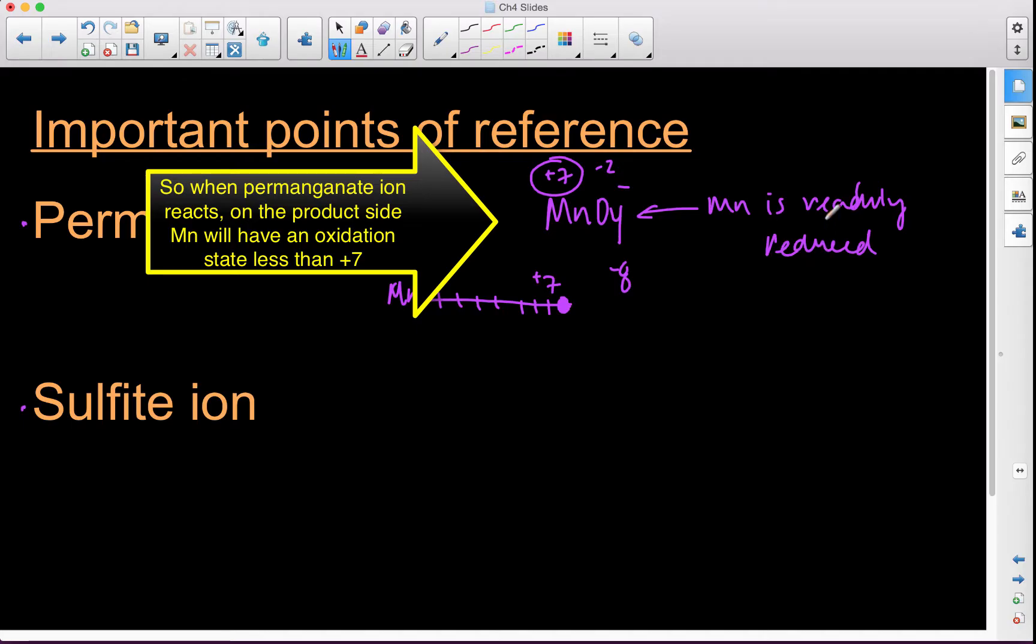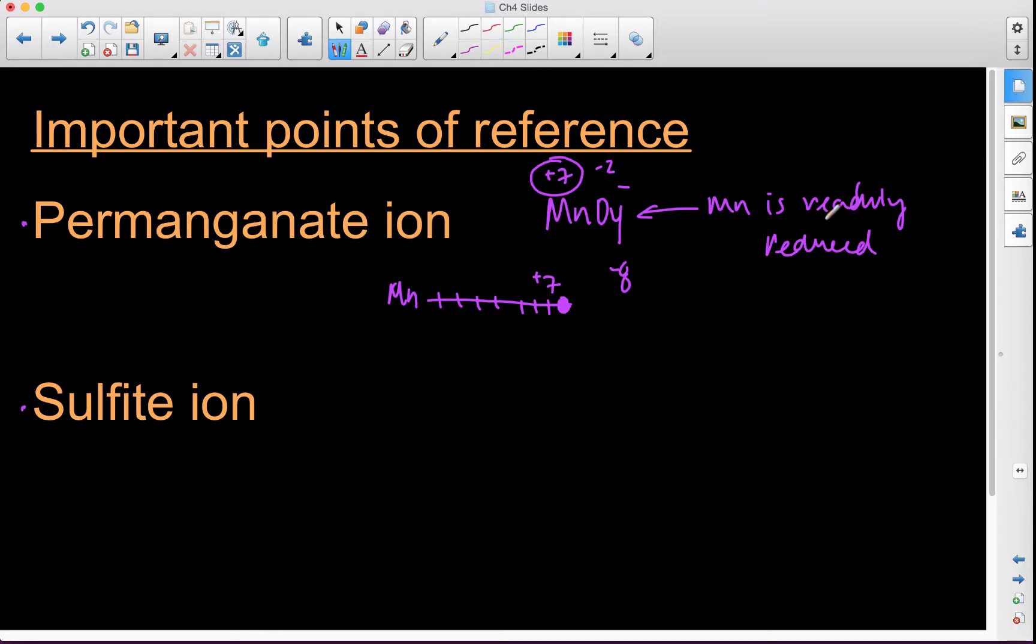What that means is when we have permanganate ion present in a chemical reaction, we should always be thinking about, this manganese is likely to be reduced. And then we can sort of interpret the rest of the reaction from that point of view. Meaning that if manganese is going to be reduced, something else must be oxidized because they have to happen together.